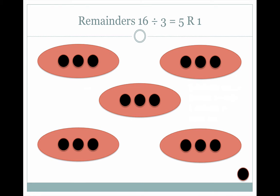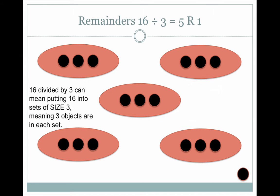What about remainders? What do remainders really mean? Let's take a look at sixteen divided by three. Sixteen divided by three can mean putting sixteen into sets of size three, giving three objects in each set and a total of five sets with one left over. This one left over is a remainder.